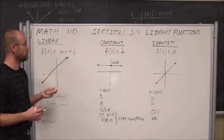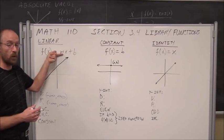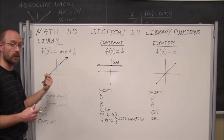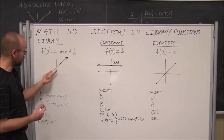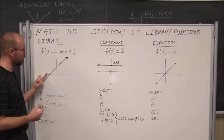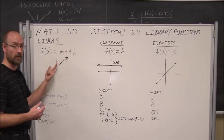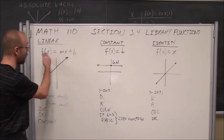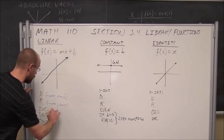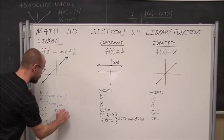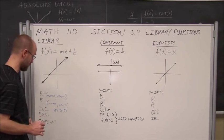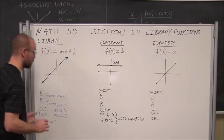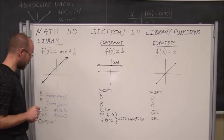When it comes to a linear equation, it depends on what the slope is to determine whether the function is increasing or decreasing. In this example, as we move from left to right, y is increasing, so this is an increasing function. It's increasing if the slope is greater than 0, and decreasing if the slope is less than 0 — a negative slope means it decreases from left to right.